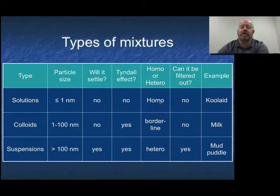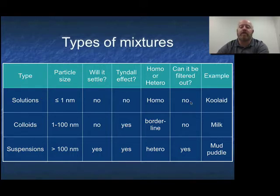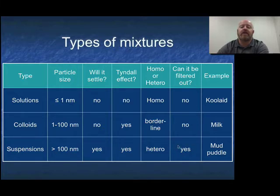In terms of classifying mixture type: solutions are always homogeneous mixtures. Colloids depend on how well they're mixed — since they don't settle, if you mix them well, you can get a homogeneous mixture. Suspensions are always heterogeneous because you can never get even mixing since they're always settling out over time. Finally, can you filter it? For solutions and colloids, particles pass directly through filter paper. For suspensions, those particles get caught, so you can filter suspensions but not solutions or colloids.